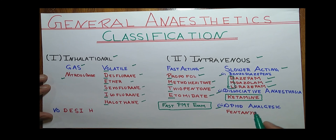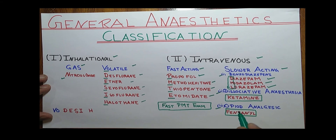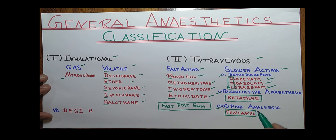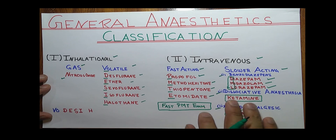In opioid analgesics, the drug is fentanyl. So students, this is all about the general anesthetic classification. If you like the video, please subscribe and hit the bell icon for more updates on our upcoming videos.